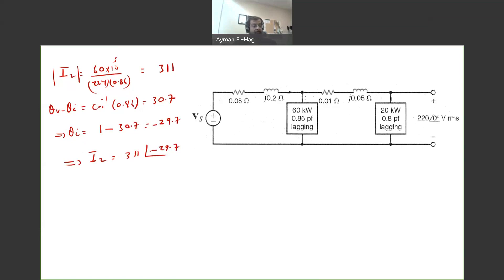Now I know both currents, I1 and I2. Now I can find my main current I, which is basically I1 plus I2, which is equal to 114 angle of minus 36.9 plus this current, which is 311 angle of minus 29.7. So we need to convert these two into rectangular, add them, convert them back into polar. If you do that, you will find that your current is 424 angle of minus 31.6.